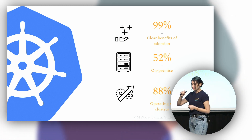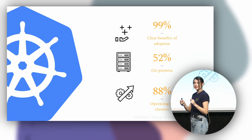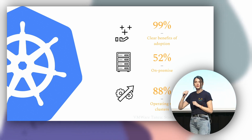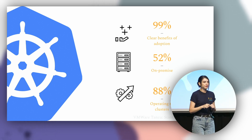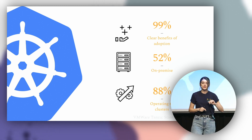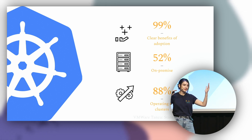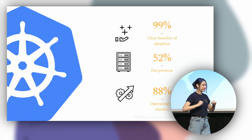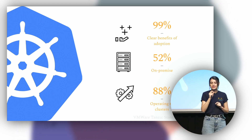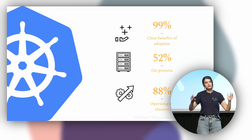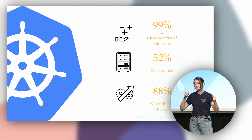We can see this in numbers as well. Based on the VMware Tanzu State of Kubernetes report released in May this year, 99% of organizations see a clear benefit of using Kubernetes — the first reason being better resource utilization for CPU and memory, and the second being better application management, especially throughout the upgrade process. A metric very relevant to this talk: 52% of organizations still have a need for bare metal. Interestingly, this number is declining from last year — it was 55%, now it's 52%.